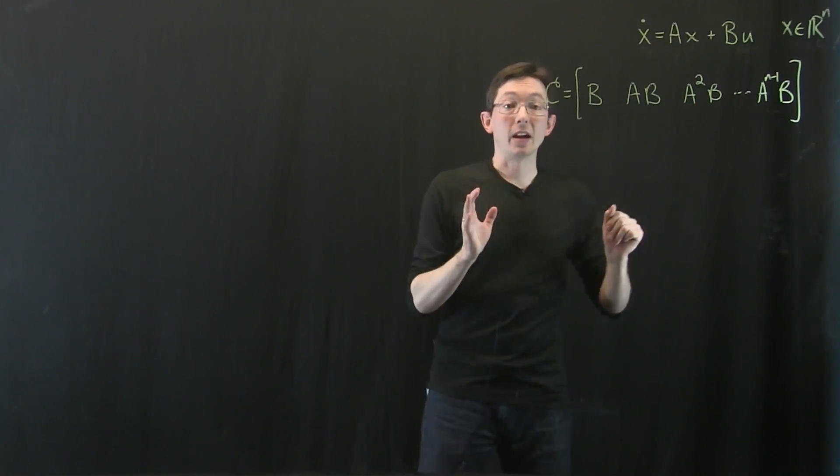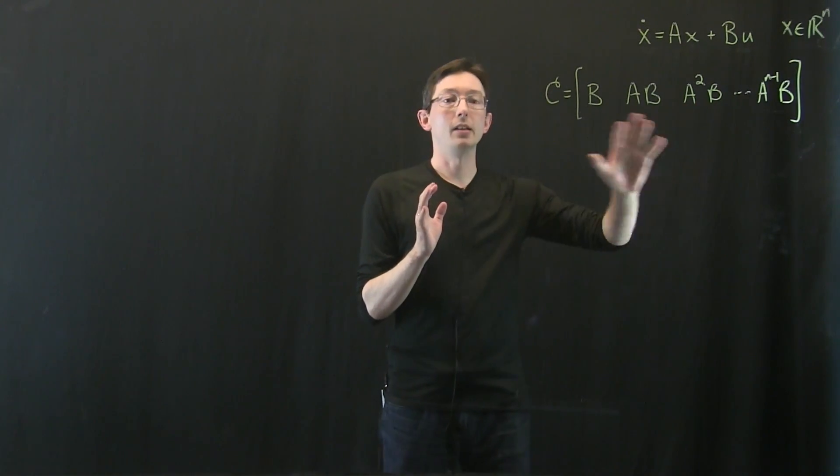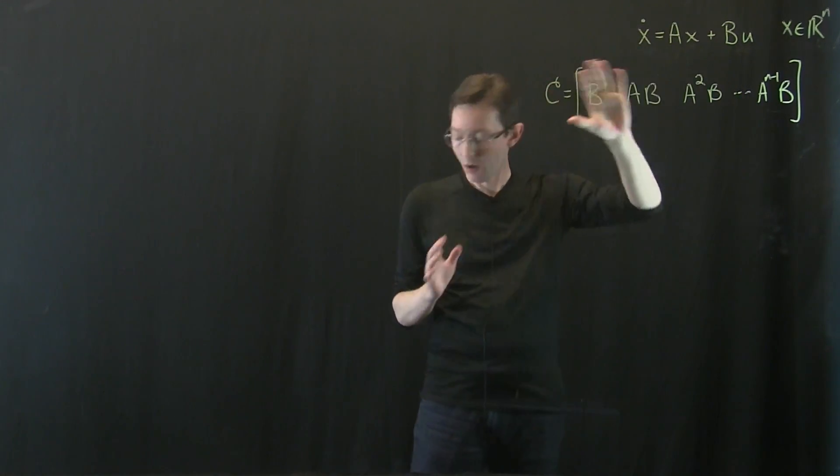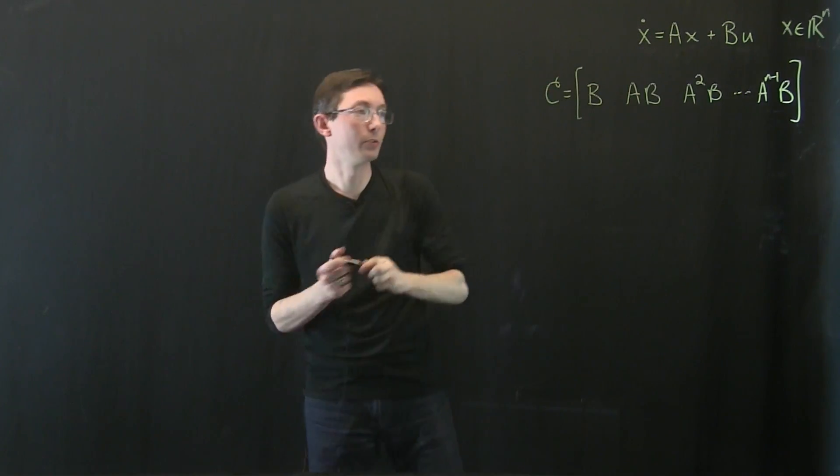We've been spending a lot of time looking at the controllability matrix of this system, this linear system X dot equals AX plus BU. We know some things about this.